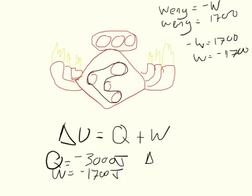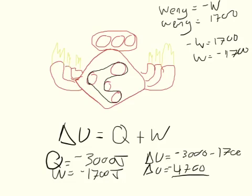So the change of internal energy is equal to negative 3,000 minus 1,700. So the change of internal energy equals negative 4,700. And so if it loses that much energy every cycle, then it has to replace the 4,700 joules of energy every cycle.